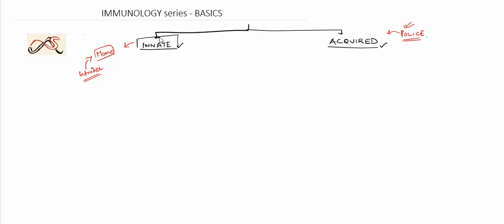Now innate immunity, the first thing that we have to know is that it is non-specific. It does not specifically recognize antigens and has a universal response based on a set of patterns that it recognizes. What are the patterns that are recognized by the innate immunity?